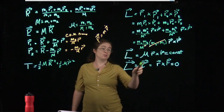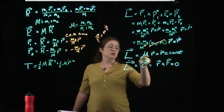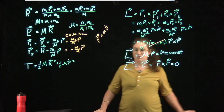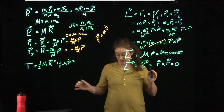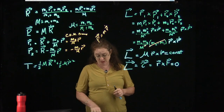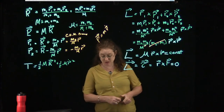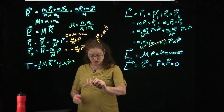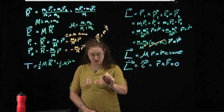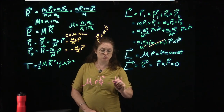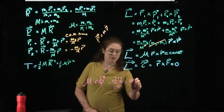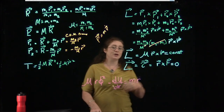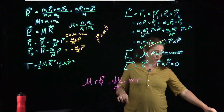Here's a Lagrangian aside: using the Lagrangian formulation, what falls out is μ·r·φ-dot squared minus dU/dr equals μ·r-double-dot. We're going to show the same result using a Newtonian approach.